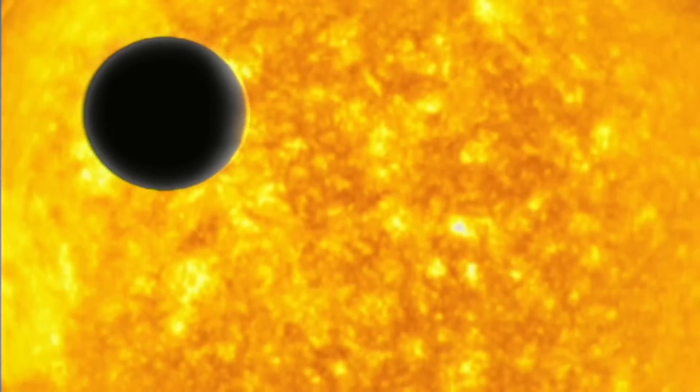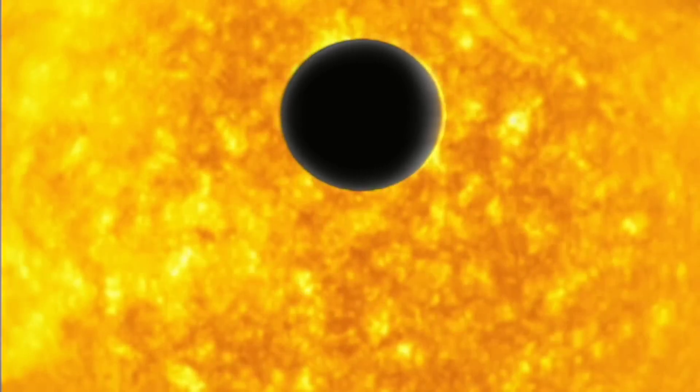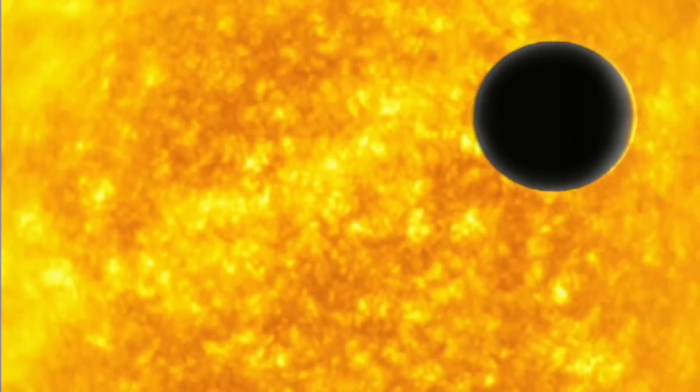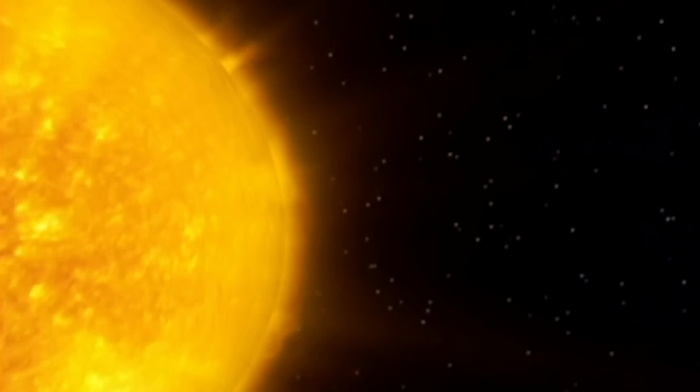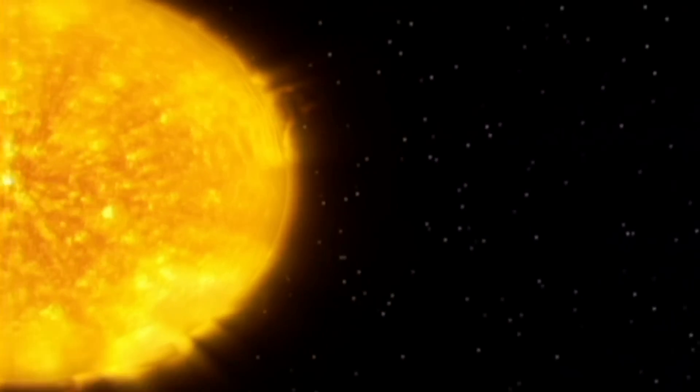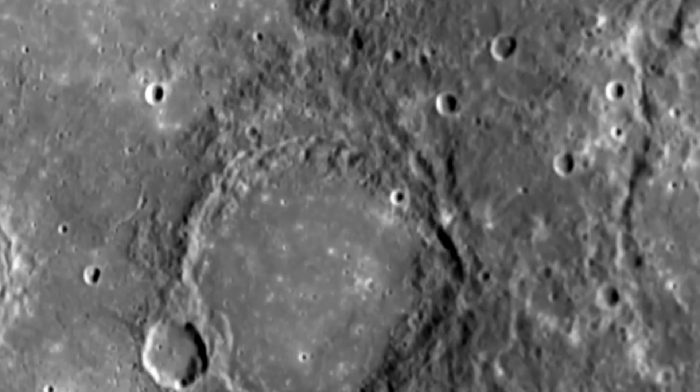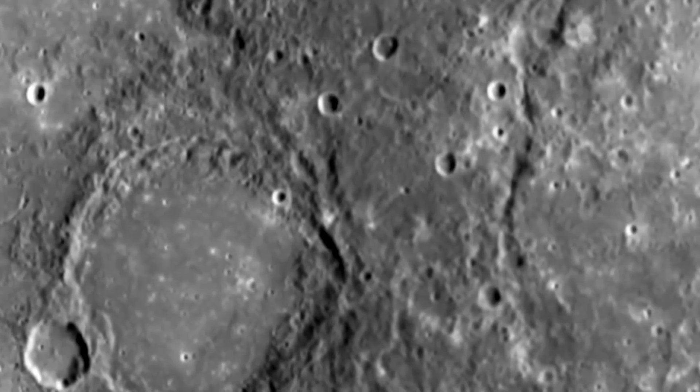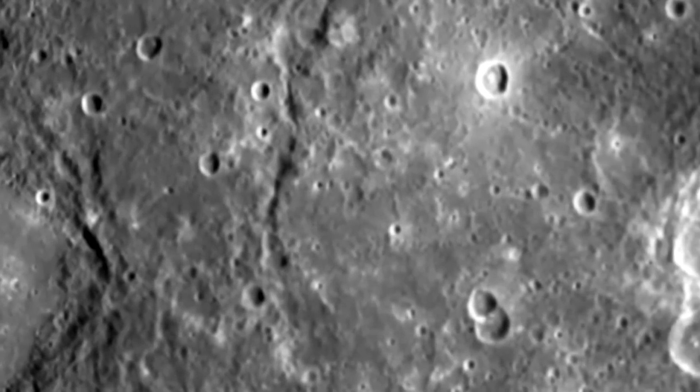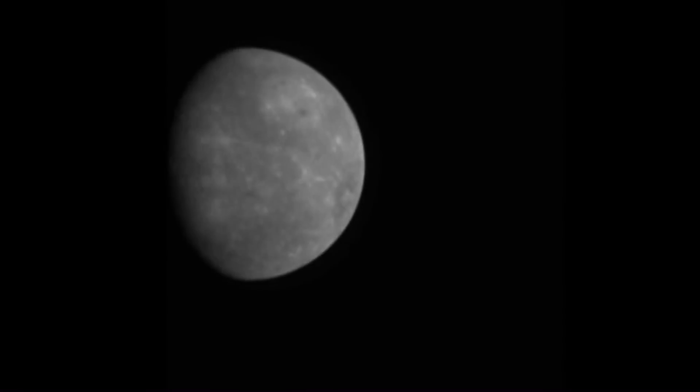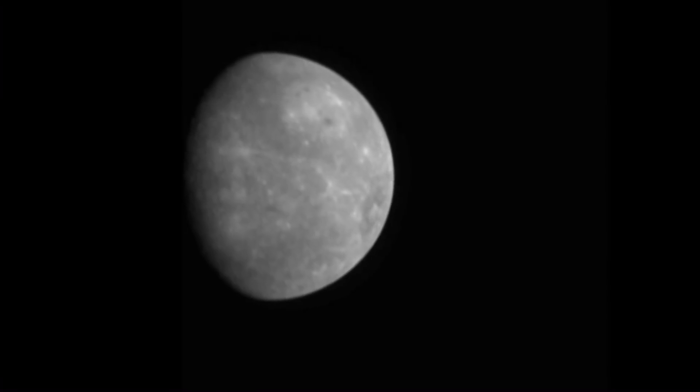Mercury also follows an odd elliptical orbit, on the one hand passing within 47 million kilometers of the Sun and then swinging out to 70 million kilometers. Another mercurial paradox is the contrast between the speed of its orbit around the Sun and its slow rotation around its own axis. On Mercury, days last longer than years, with one day lasting up to 176 Earth days and a year only 88 Earth days.